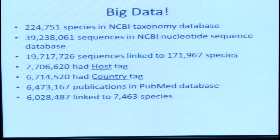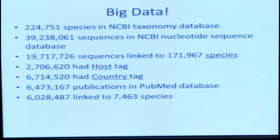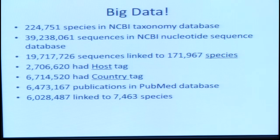Our database takes that information on a big scale. This has led us into the world of big data. Within the NCBI taxonomy database, there are some 200,000+ species, and recently it reached about 40 million gene sequences. We've linked about 20 million gene sequences to about 170,000 species. Of those, nearly 3 million have a host tag suggesting they're the sequences of a pathogen, and some nearly 7 million have a country tag. From that information, we've also gone into PubMed and publications to get additional information not available in sequence databases.